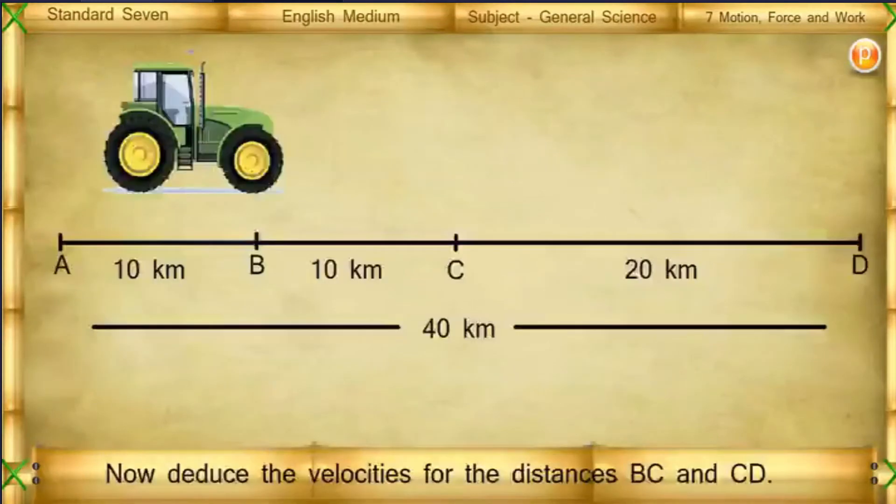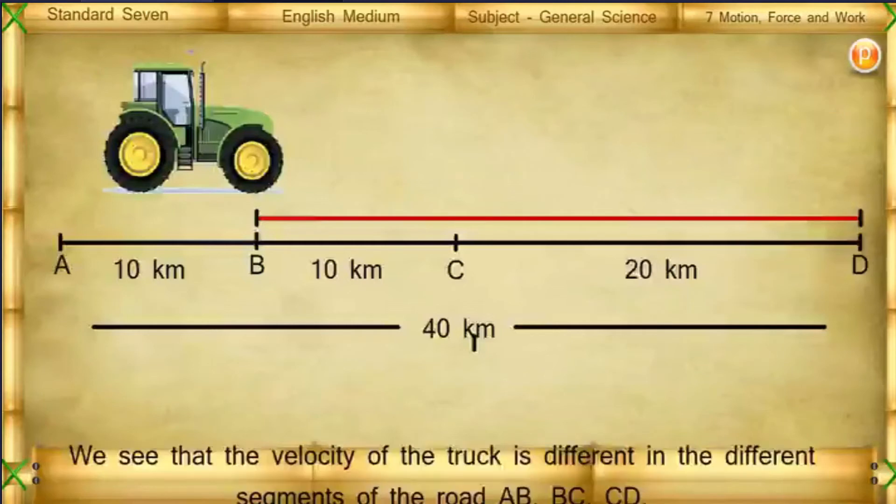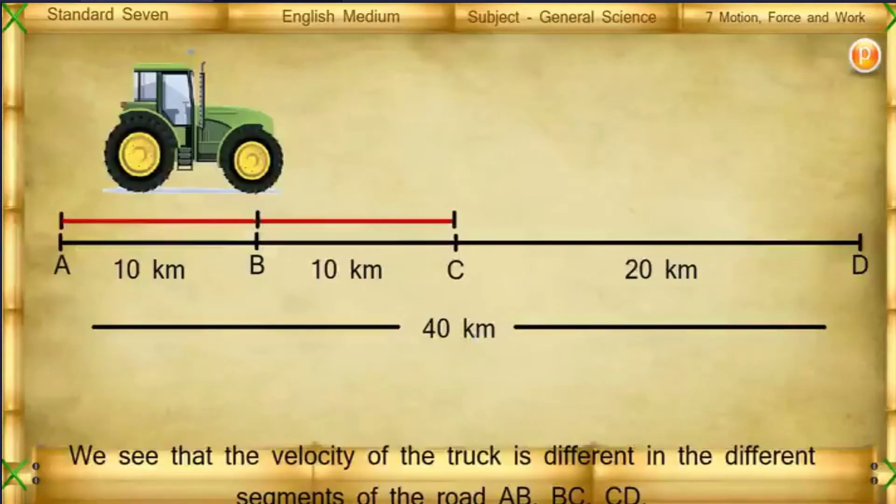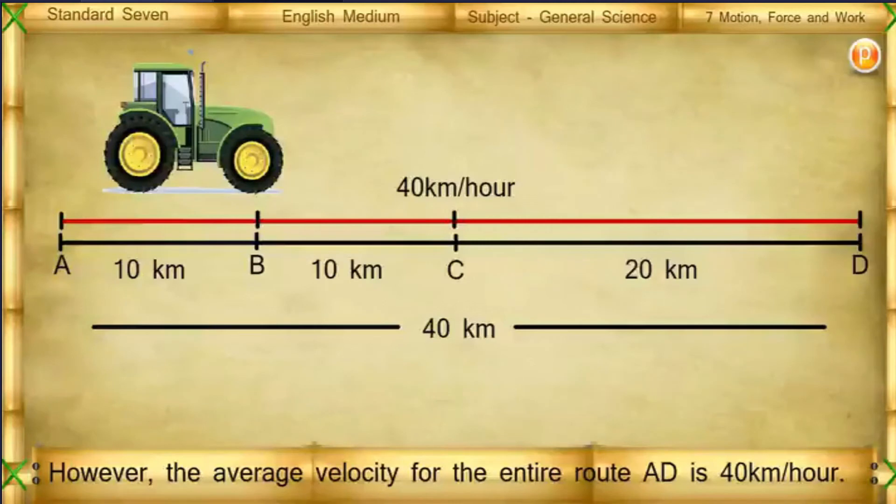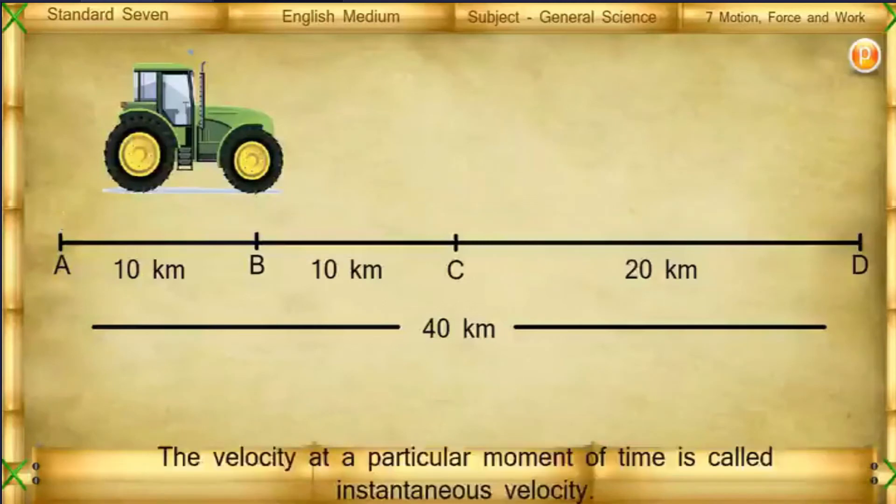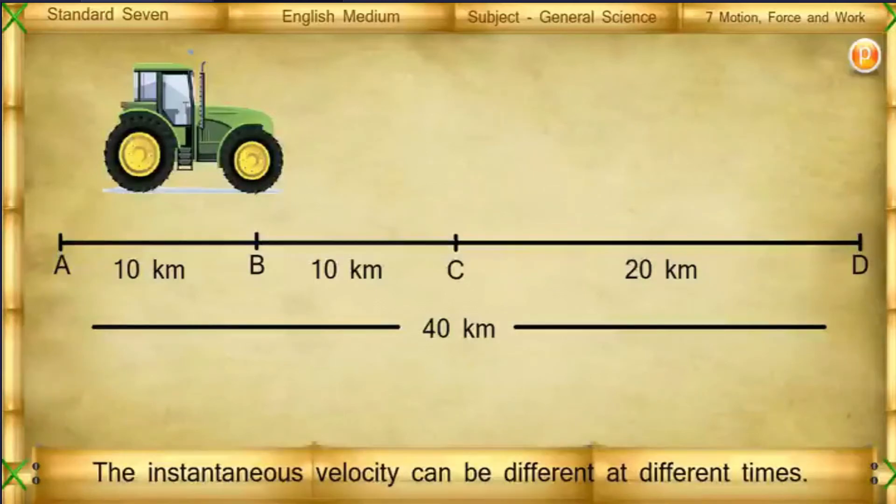Now, deduce the velocities for distances BC and CD. We see that the velocity of the truck is different in the different segments of the road AB, BC, CD. However, the average velocity of the entire route AD is 40 kilometers per hour. The velocity at a particular moment of the time is called instantaneous velocity. The instantaneous velocity can be different at different times.